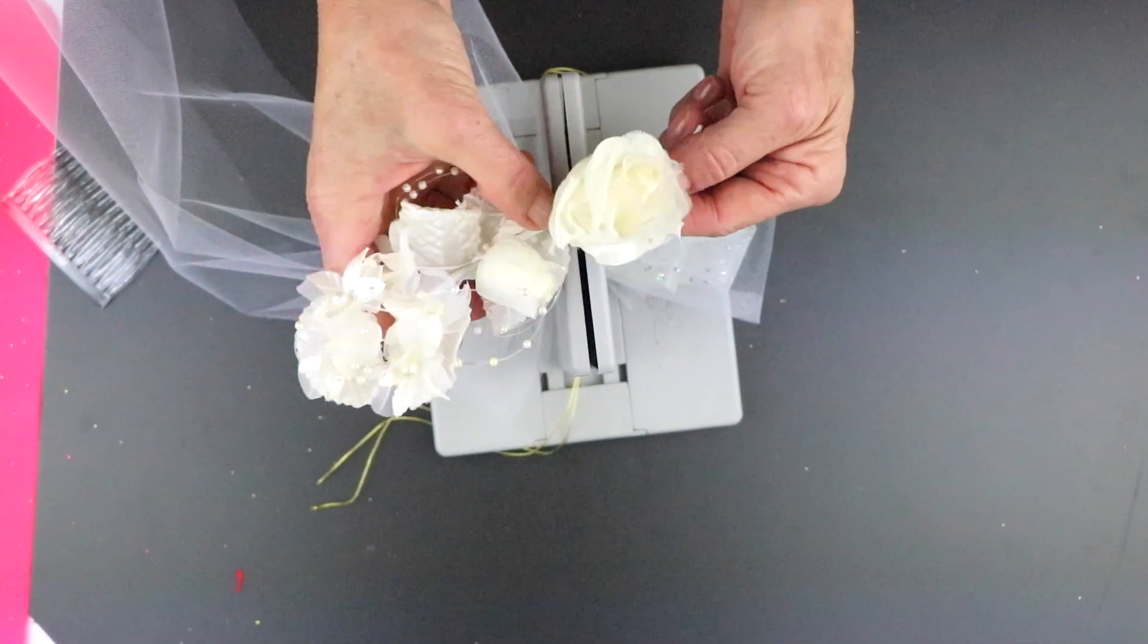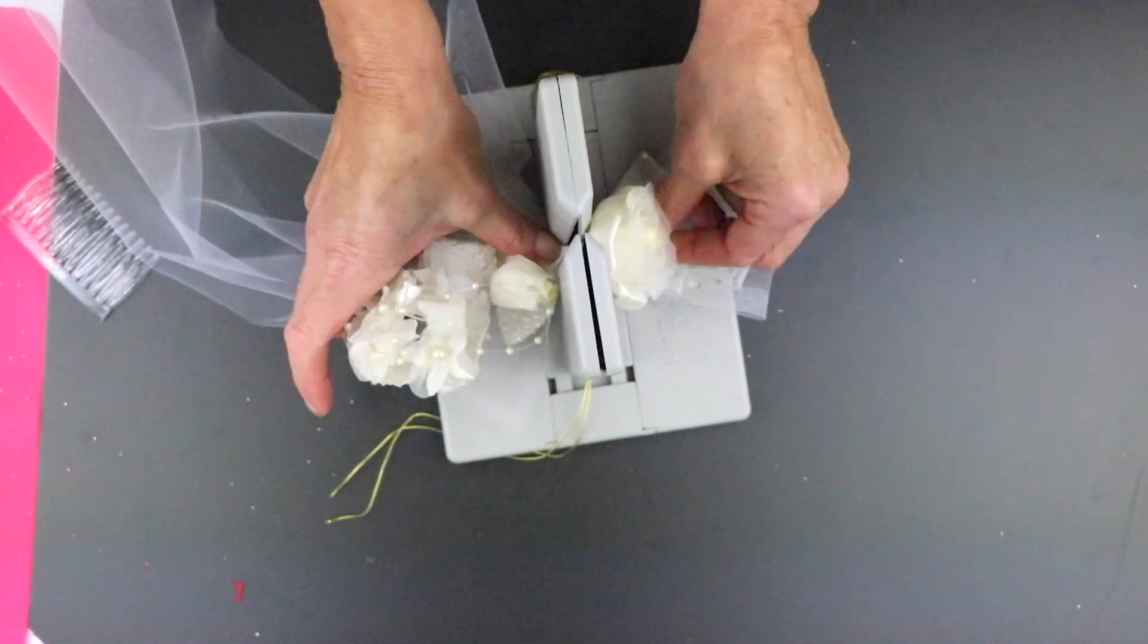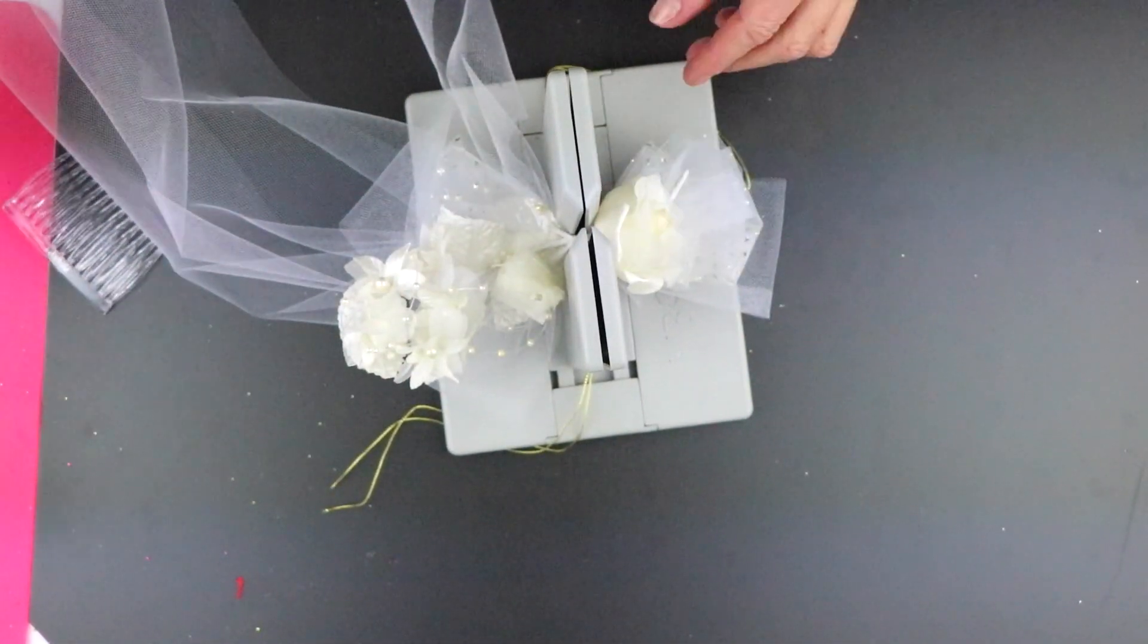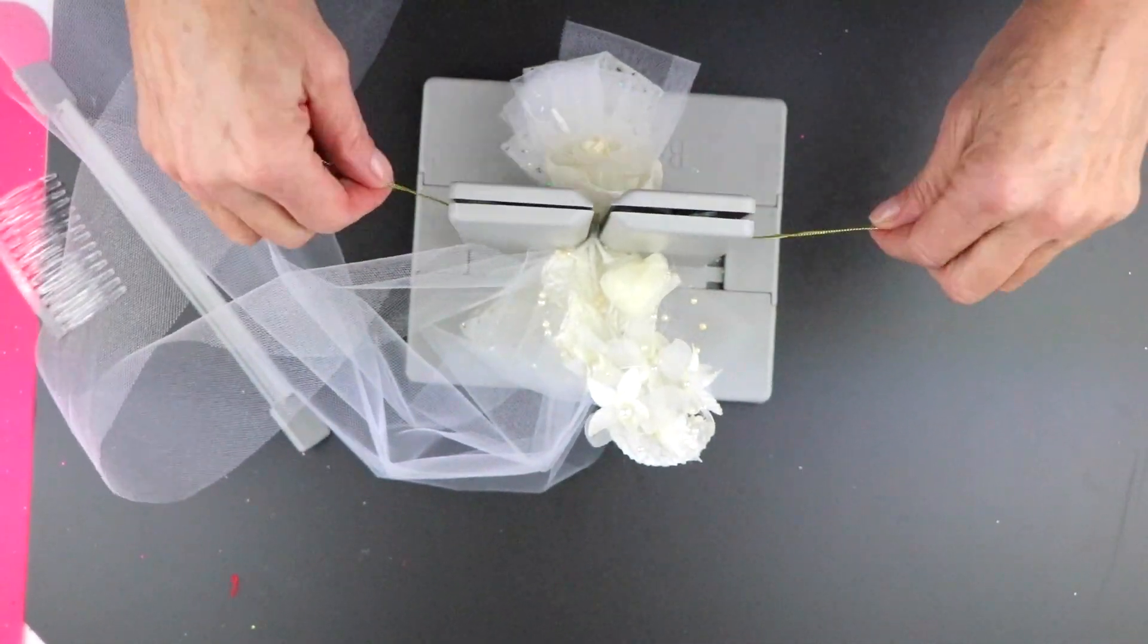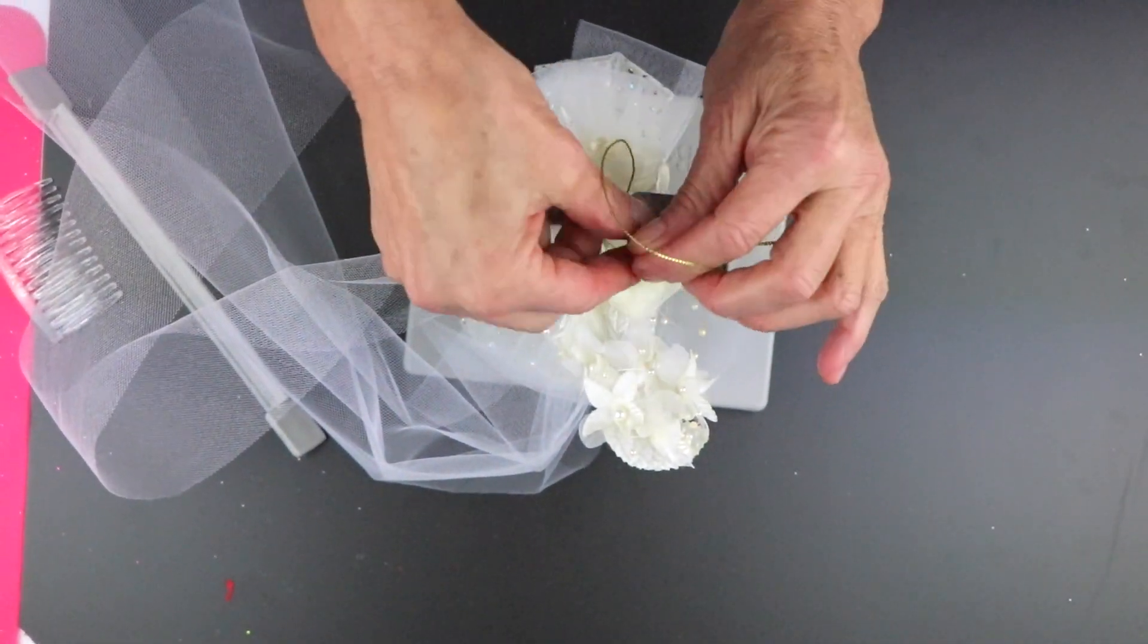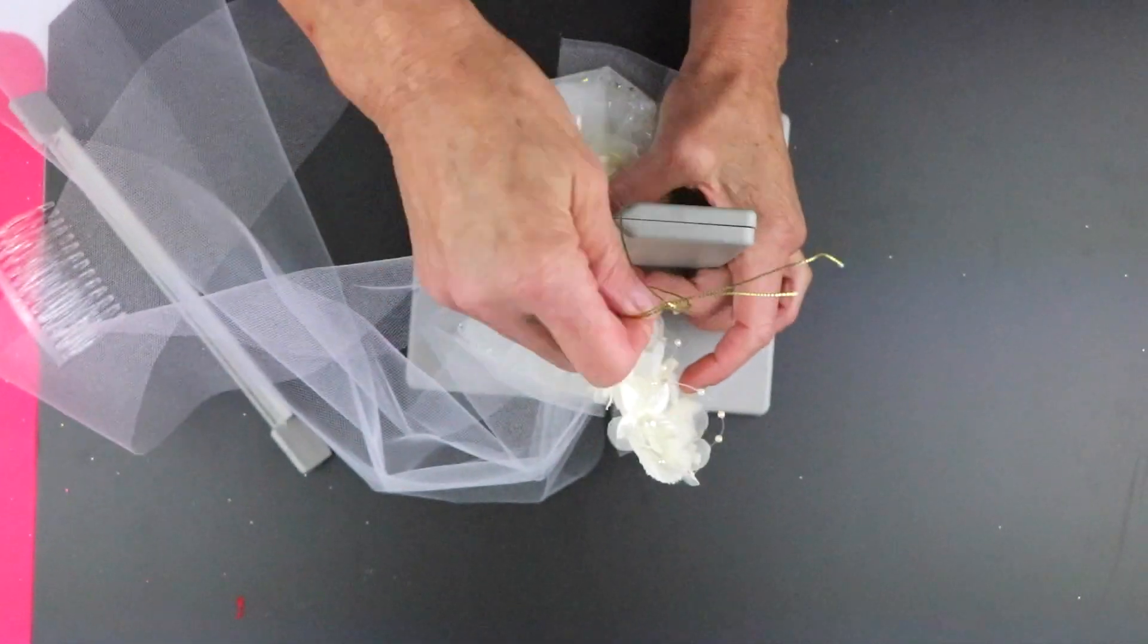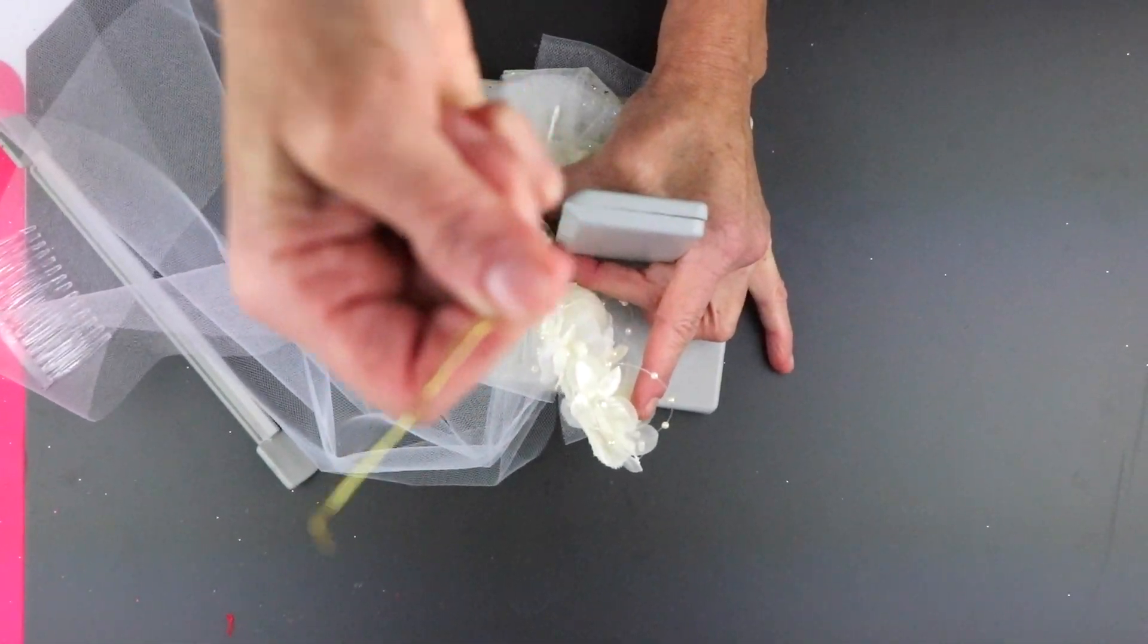So now I'm going to take my bridal pick, and I'm just going to lay that right down into the Bowdabra. Then I'm going to take my Bowdabra bow wire, bring it up here, hold my bow down really tight as I'm tying off.